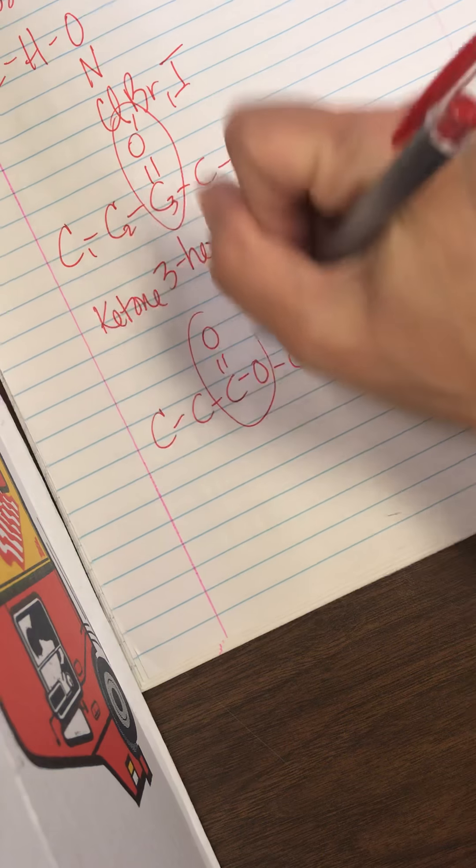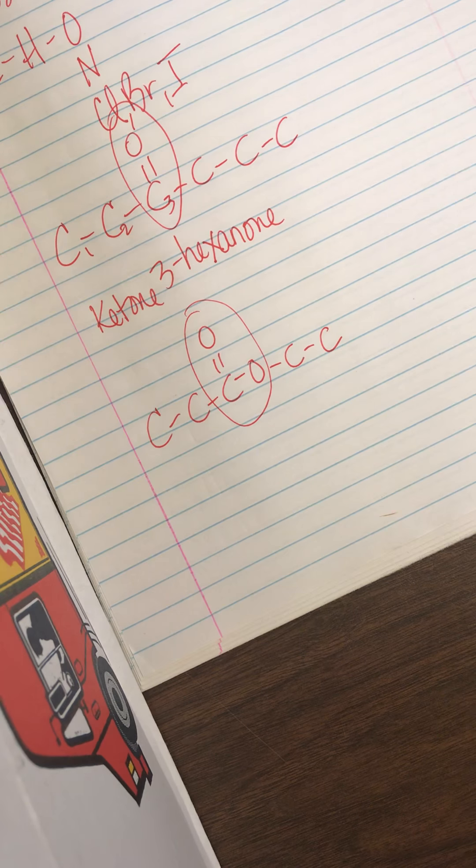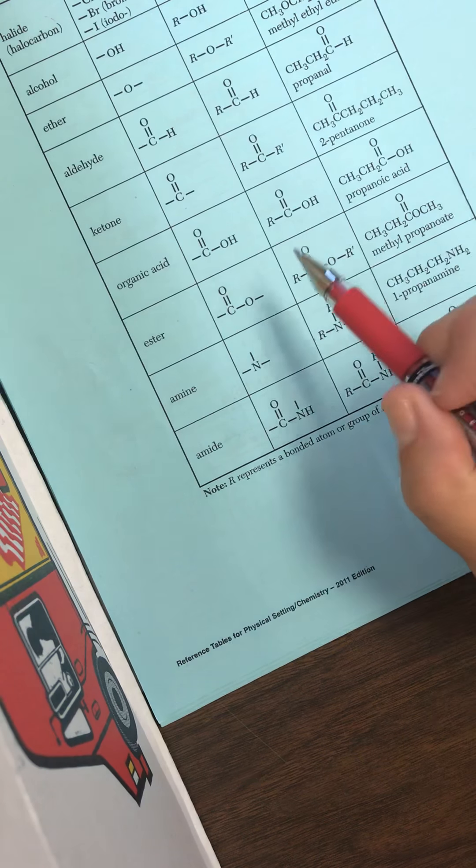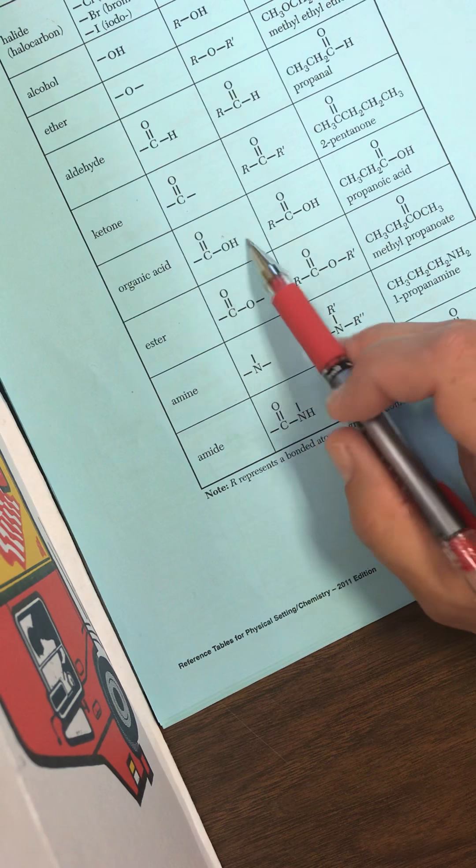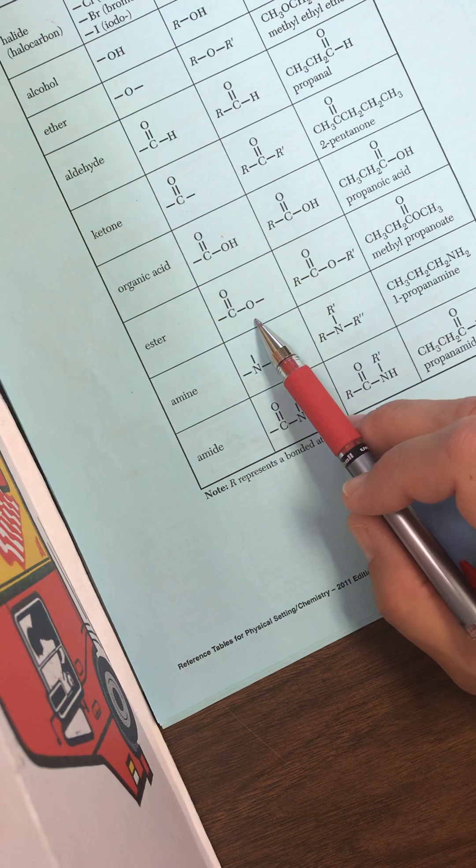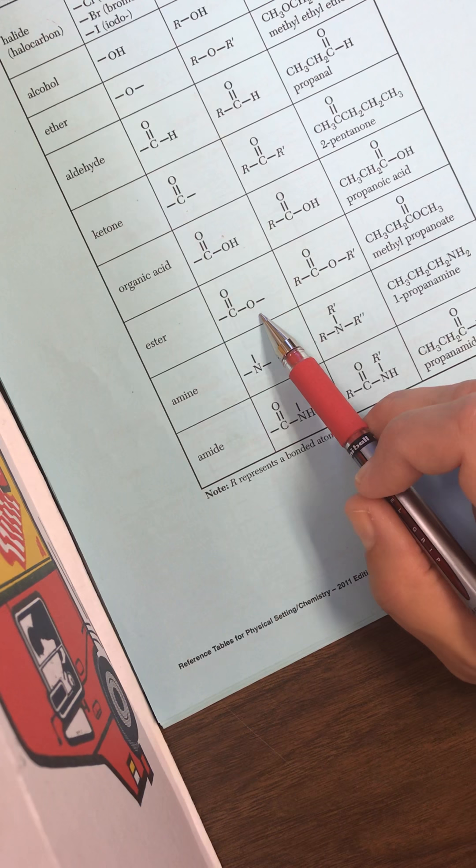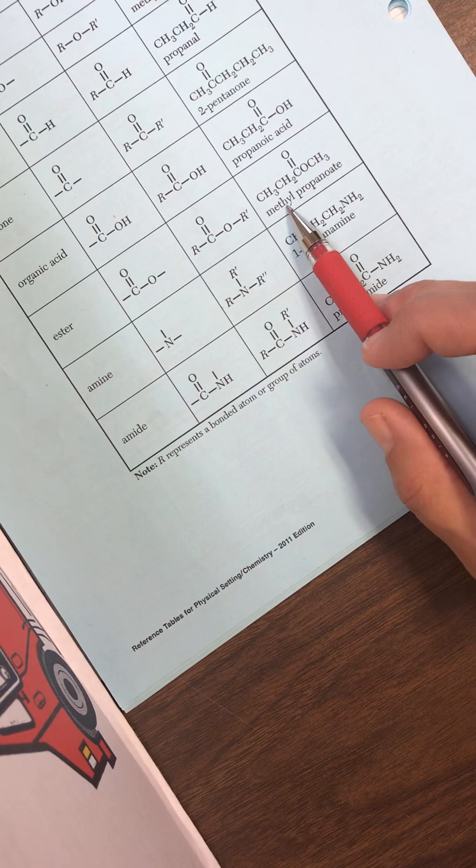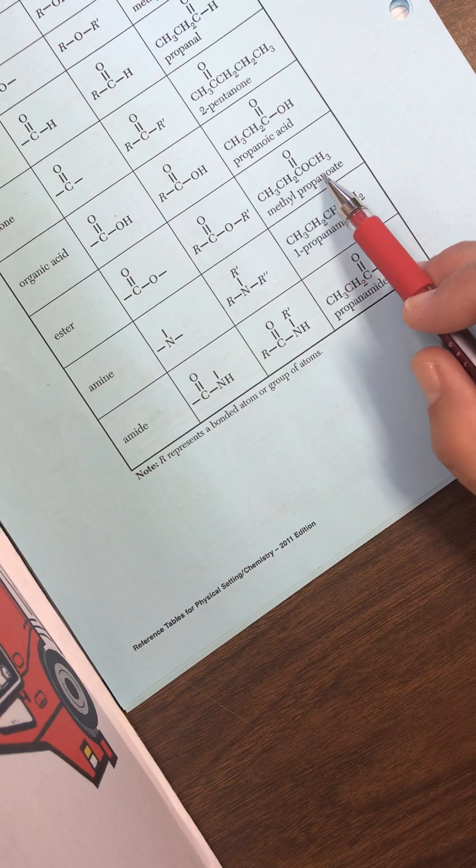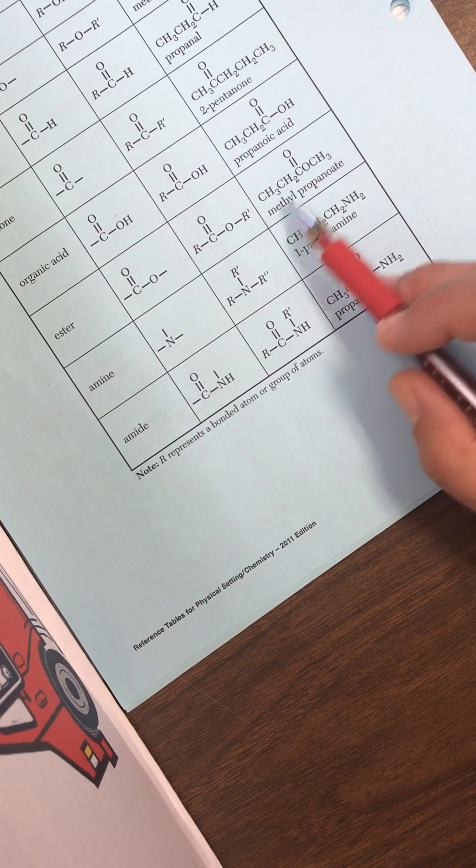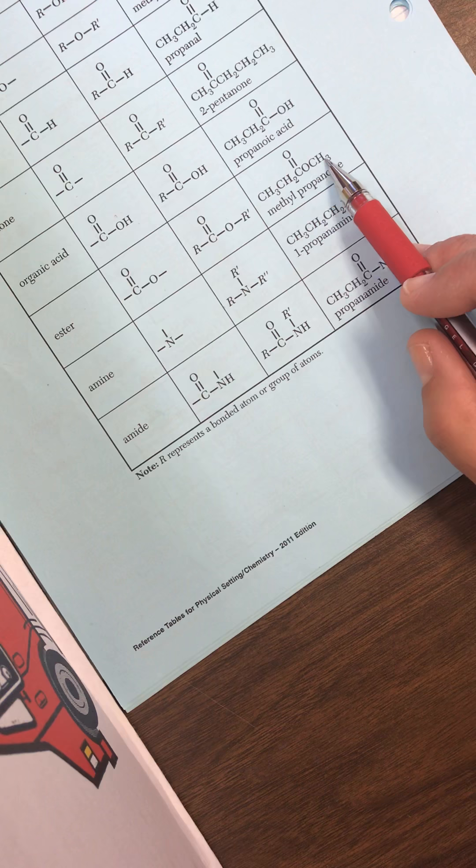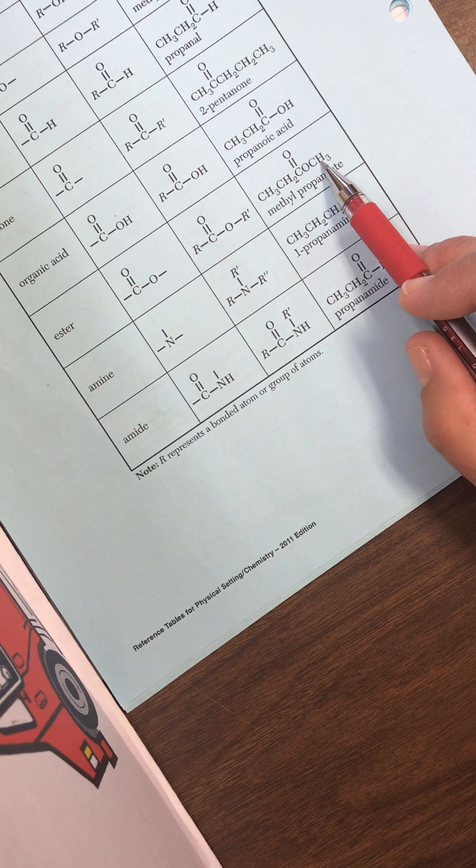All right, let's try another. Okay, so I circle what's unique. And then I go find it. So it's not an organic acid because it's not on the end with an OH. Here it is. It's an ester. It's got the double bonded O and an O after it. And I look at how they named it methylpropanoate.